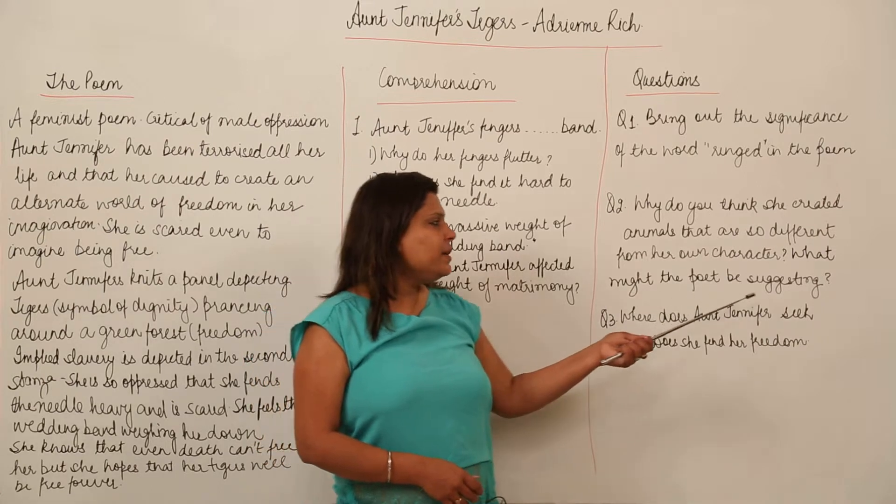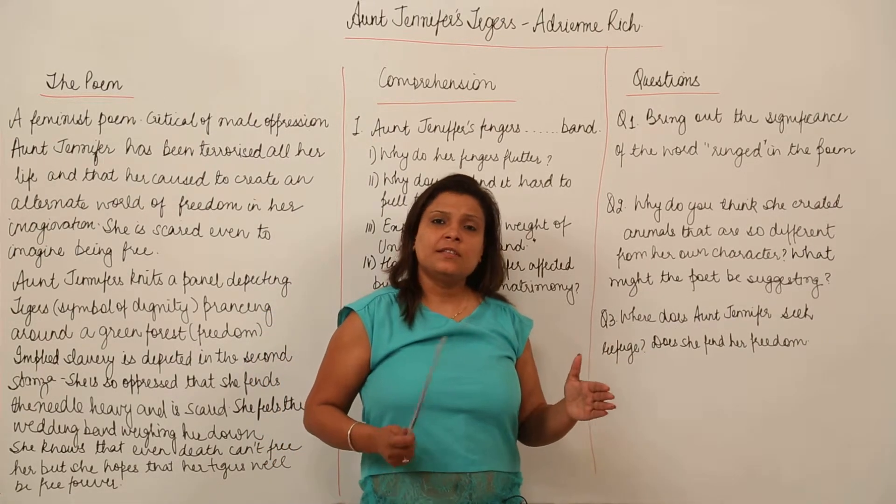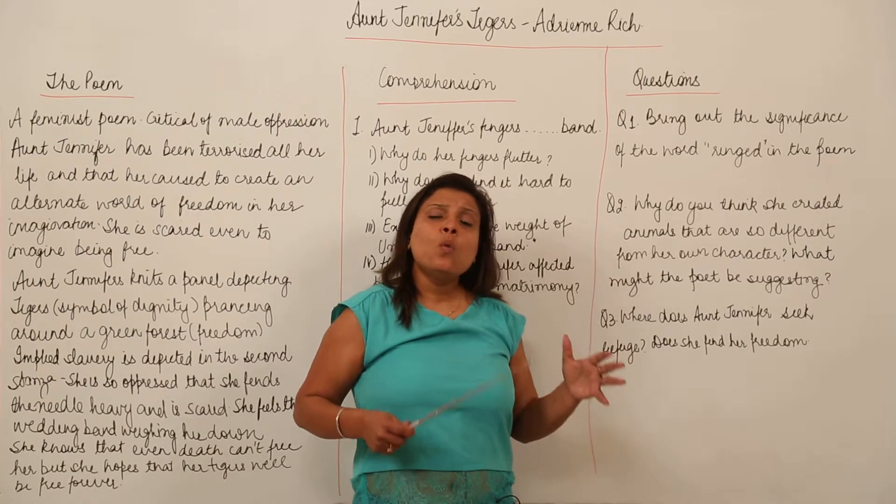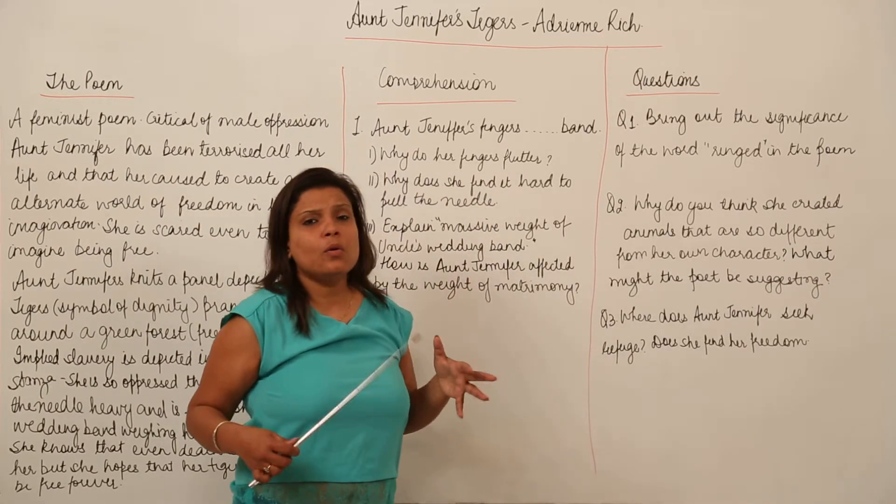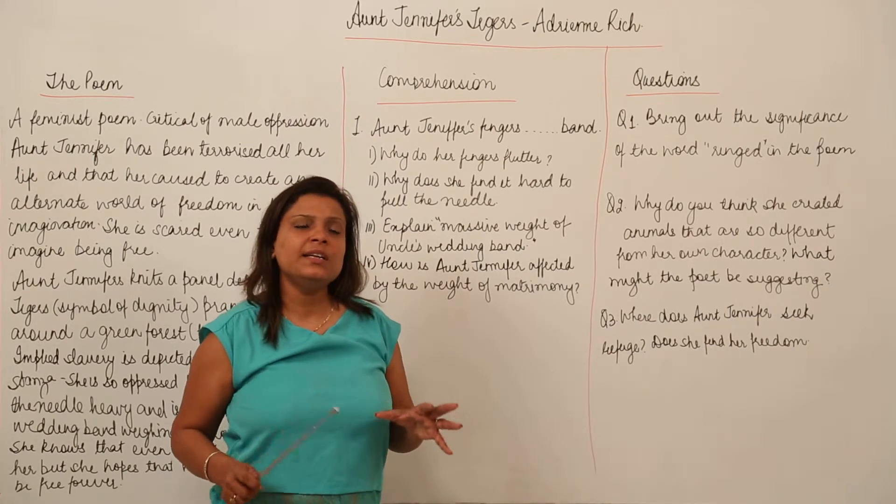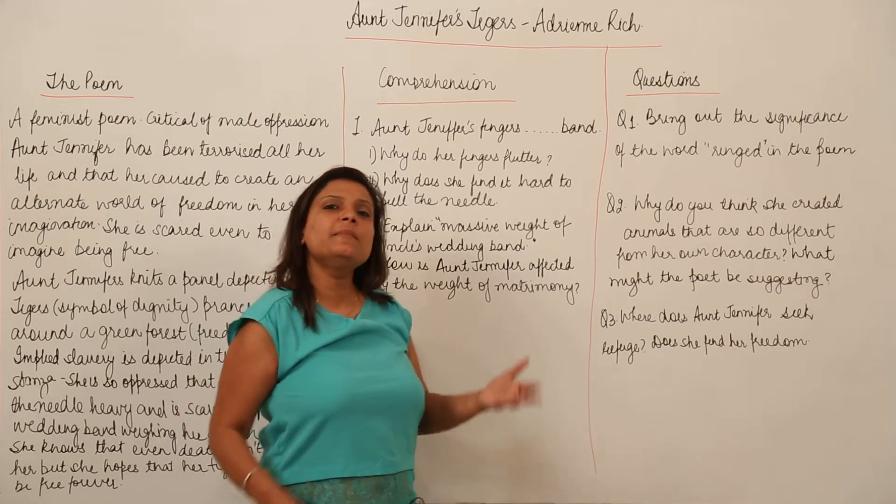What might the poet be suggesting? He is suggesting the contrast that she is using the tapestry as an escape route. What she cannot become in her own life, she wants her tigers to be so that she is at least able to express her yearning for freedom in that tapestry.